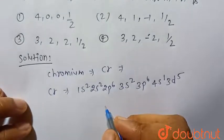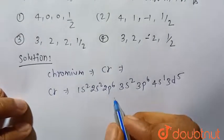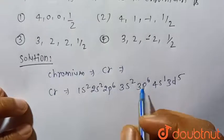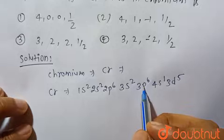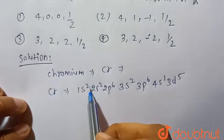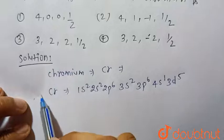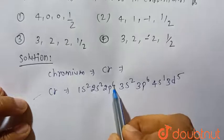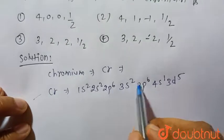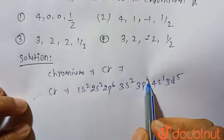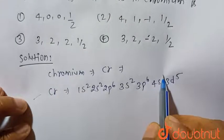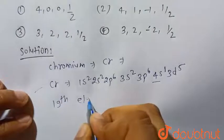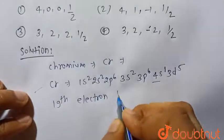Now we have to find in which orbital or subshell the 19th electron lies. So let's see: 2 + 2 + 6 = 10, plus 2 = 12, plus 6 = 18, and this is the 19th electron.